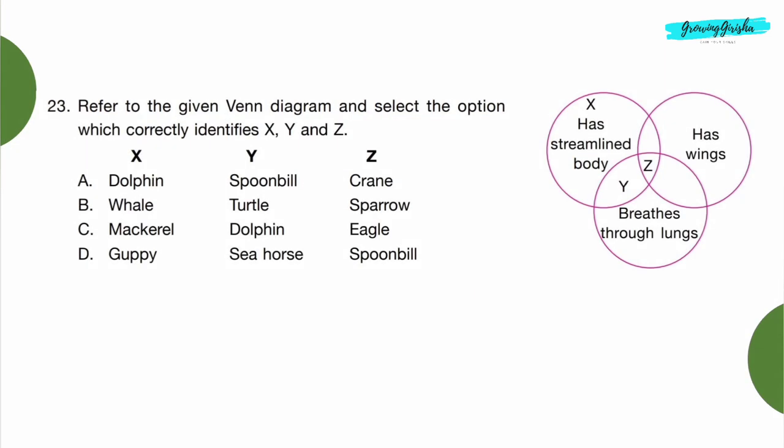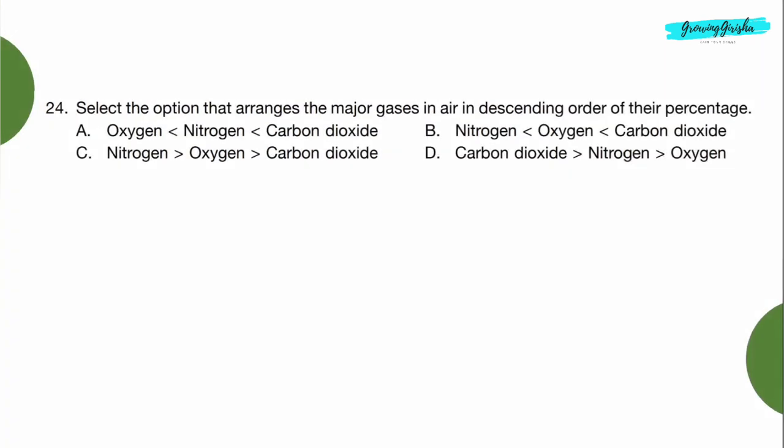Question 23: Refer to the given Venn diagram and select the option which correctly identifies X, Y, and Z. Option C. Question 24: Select the option that arranges the major gases in air in descending order of their percentage. The percentage of nitrogen is highest in the atmosphere. In Option B it is saying nitrogen is less than oxygen - this is incorrect. In Option C, nitrogen is higher than oxygen - correct. Oxygen is higher than carbon dioxide - this is correct, so Option C is the correct answer.